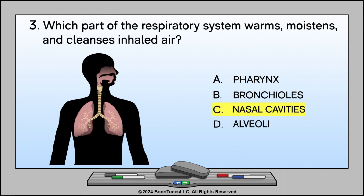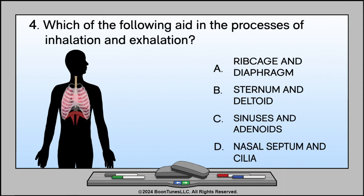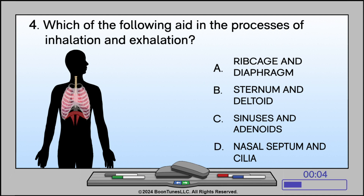Which of the following aid in the processes of inhalation and exhalation? A. Ribcage and diaphragm. B. Sternum and deltoid. C. Sinuses and adenoids. D. Nasal septum and cilia. The answer is A. Ribcage and diaphragm.